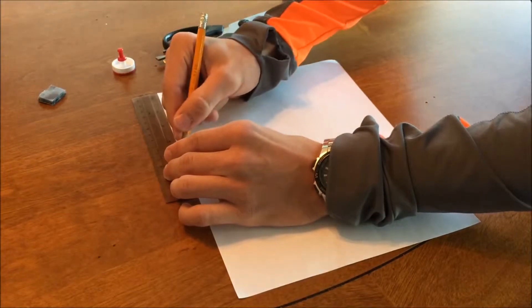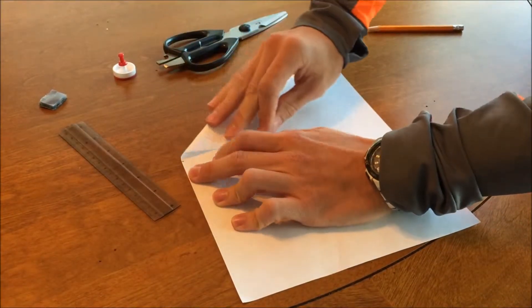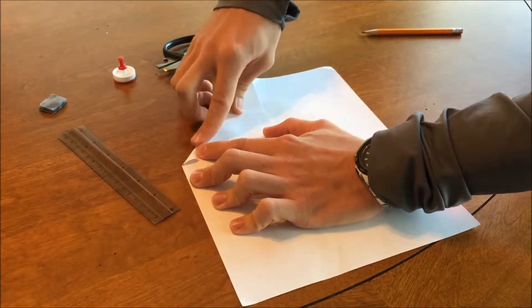First you want to measure out a piece of paper that's 4 inches by 4 inches square. Next, cut out the 4 inch by 4 inch square piece of paper.